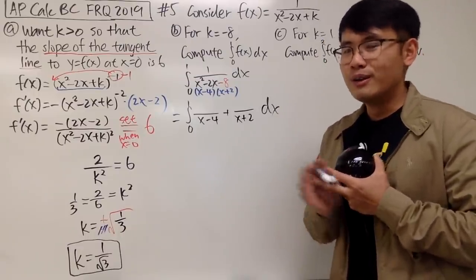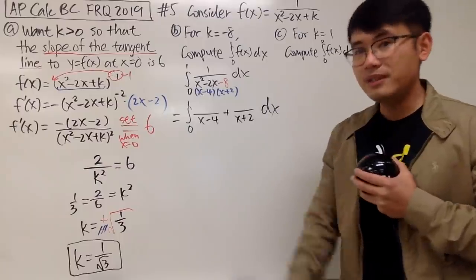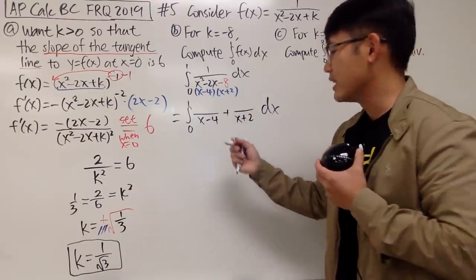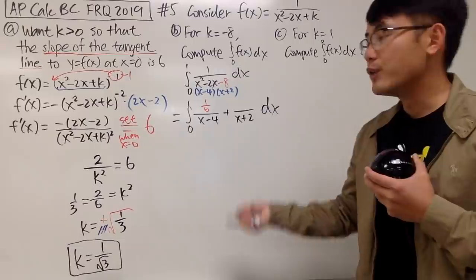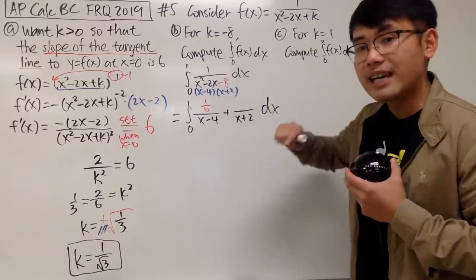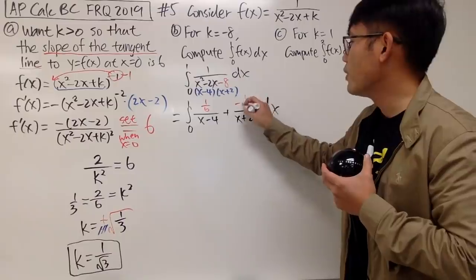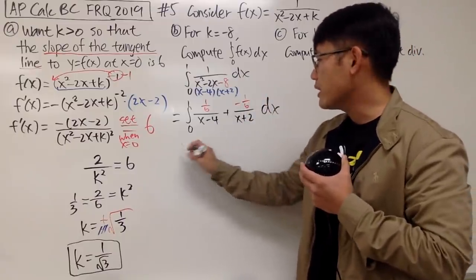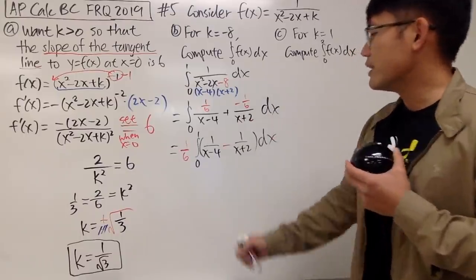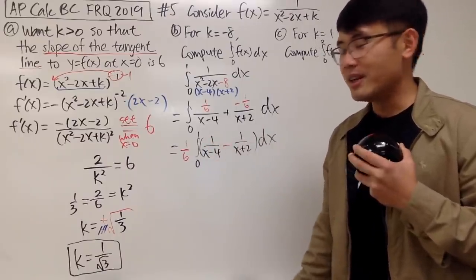Let's figure this out. Cover up (x minus 4), set x equal to 4: we get 1 over (4 plus 2) which is 1/6. So the numerator for the first term is 1/6. Then for (x plus 2): set x equal to negative 2, and we get 1 over (negative 2 minus 4) which is negative 1/6. Both terms have 1/6, so we can take that to the front. Notice that from 0 to 1, the function is continuous, so we can just continue without any worry.